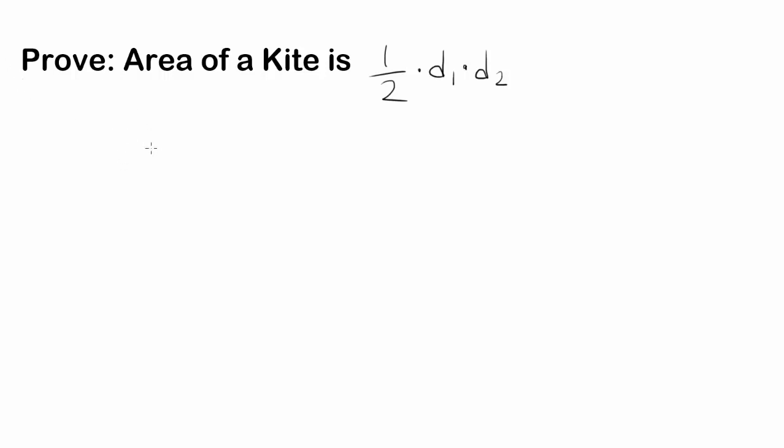So when we have a kite, let me just draw a kite. A kite is when these two are the same length and these two are the same length, so you have these two pairs of the same length.